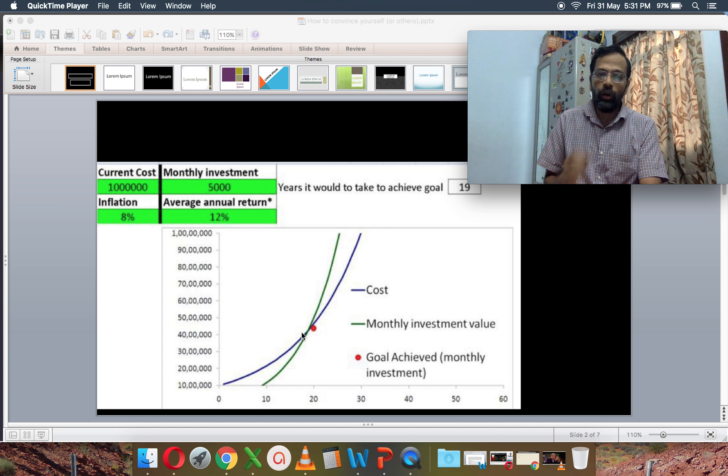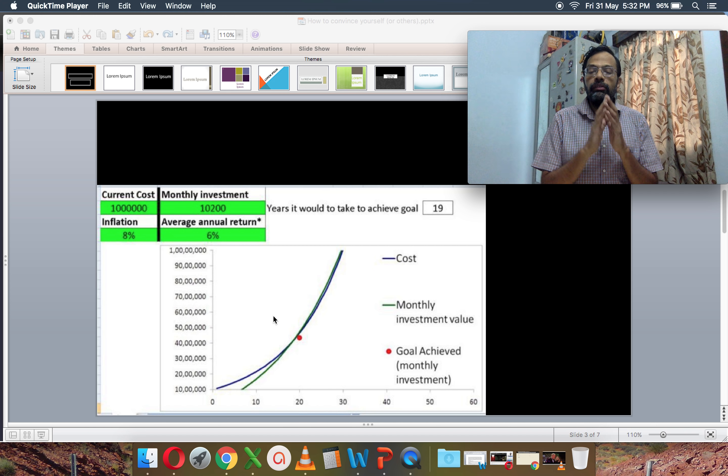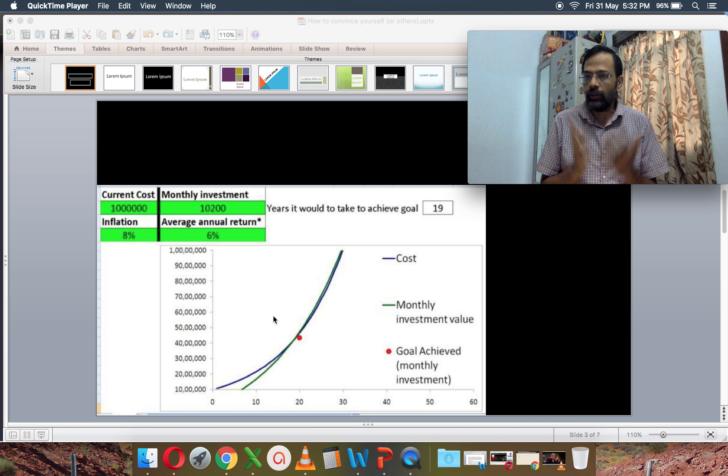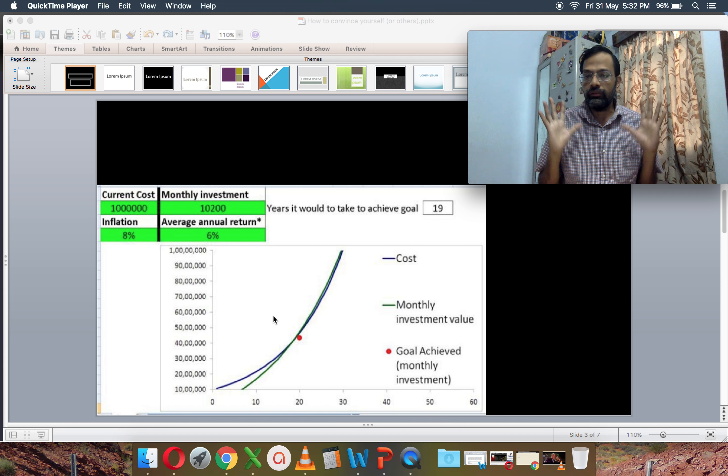So let's take the second example. So have a look at these numbers. The next example is the current cost is 10 lakhs. The inflation remains at 8%. Now, the person says I will not take any kind of risk. I will not involve myself in stock markets. I will be in safe fixed deposits or LIC kind of endowment policies or whatever which will give me something like a 6% post-tax annual return and that's it. That's all I am going to do.